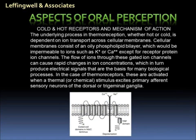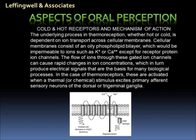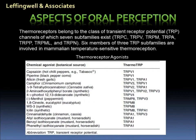The process in thermoreception, whether hot or cold, is dependent on ion transport across cellular membranes. Cellular membranes consist of an oily phospholipid bilayer, which would be impermeable to ions such as calcium or potassium, except for receptor protein ion channels. The flow of ions through these gated ion channels causes rapid changes in ion concentrations, which in turn produces electrical signals that trigger our perception. In the case of thermoreceptors, these are activated when a thermal or chemical stimulus excites primary afferent sensory neurons of the dorsal or trigeminal ganglion. Thermoreceptors belong to the class of transient receptor potential, or TRP, channels, of which seven subfamilies exist.